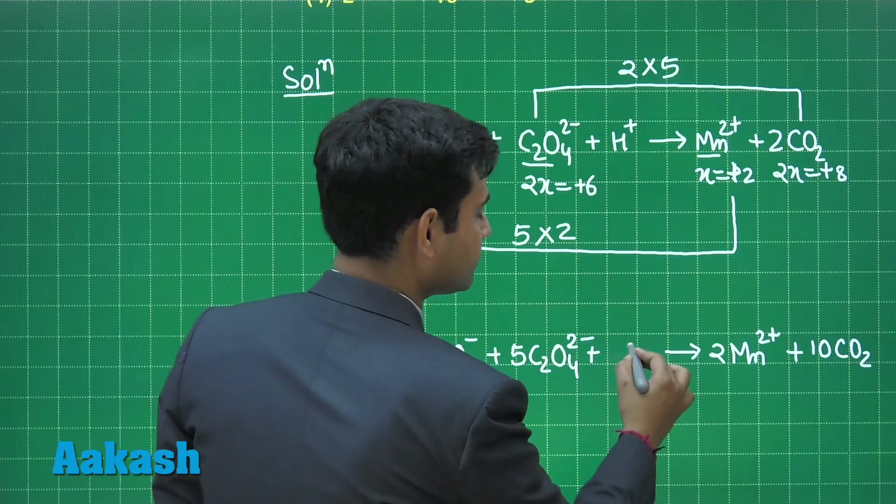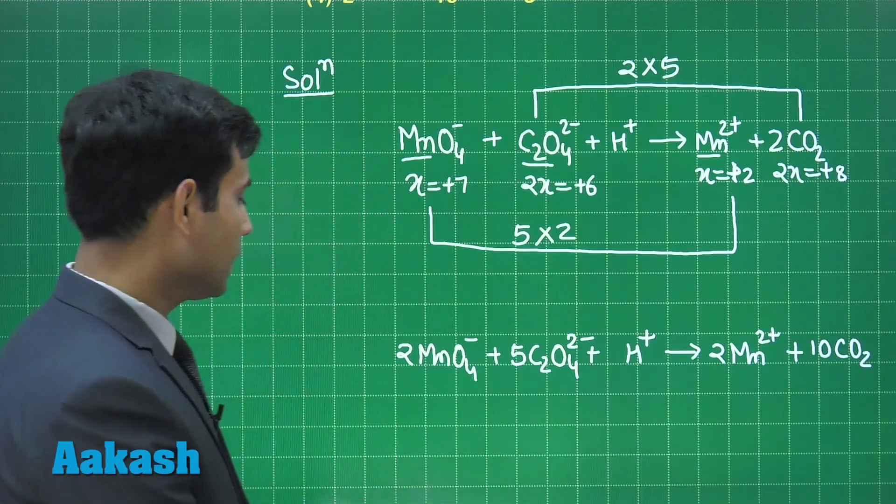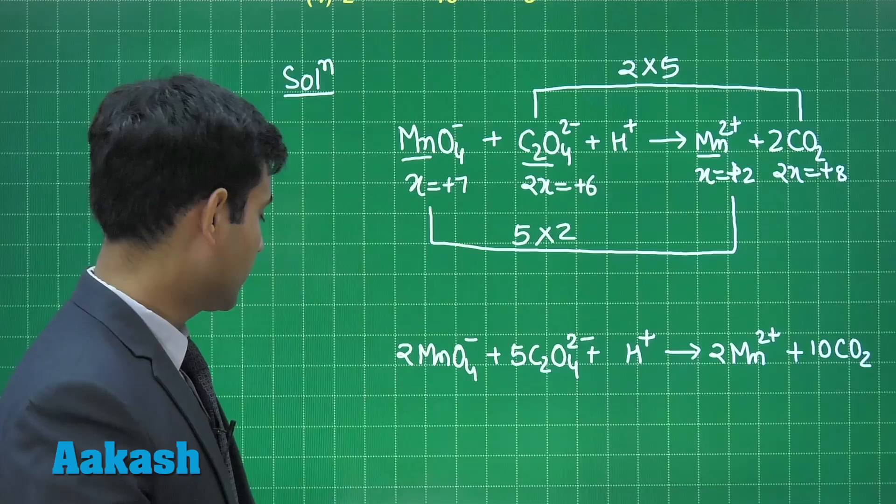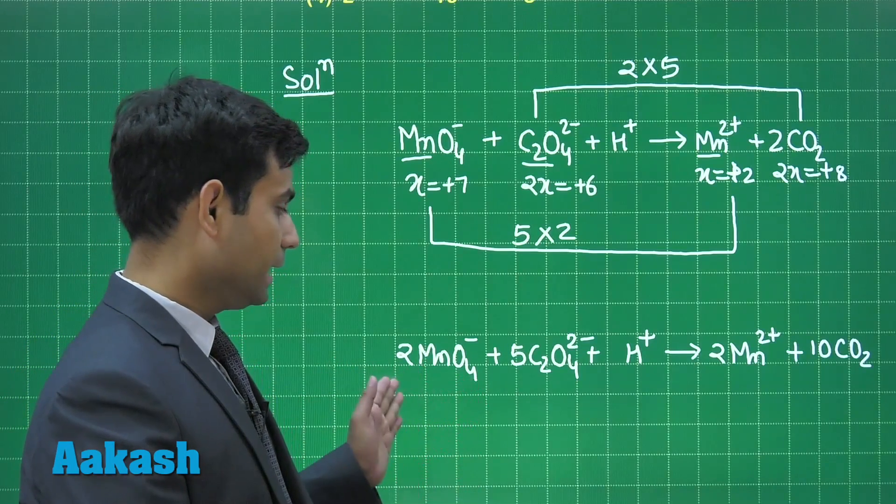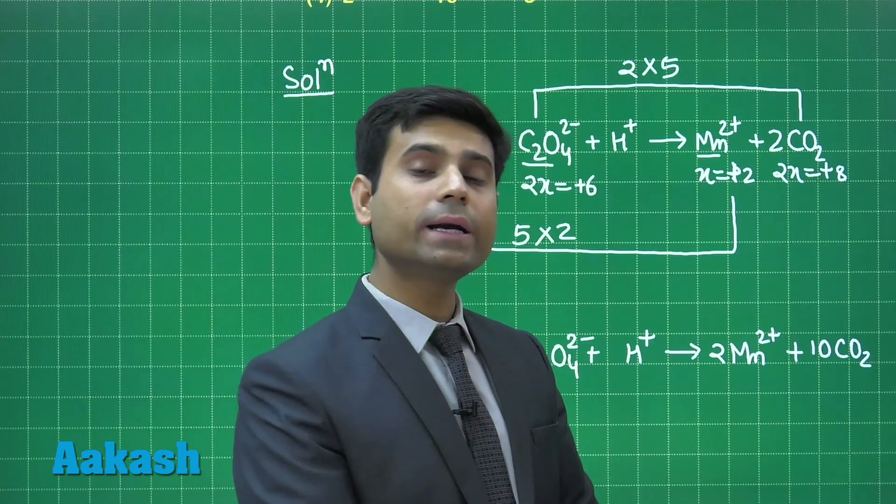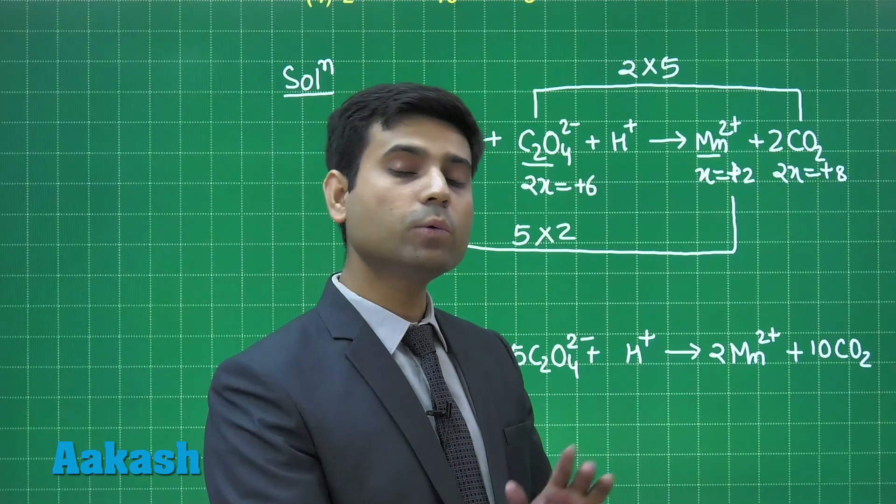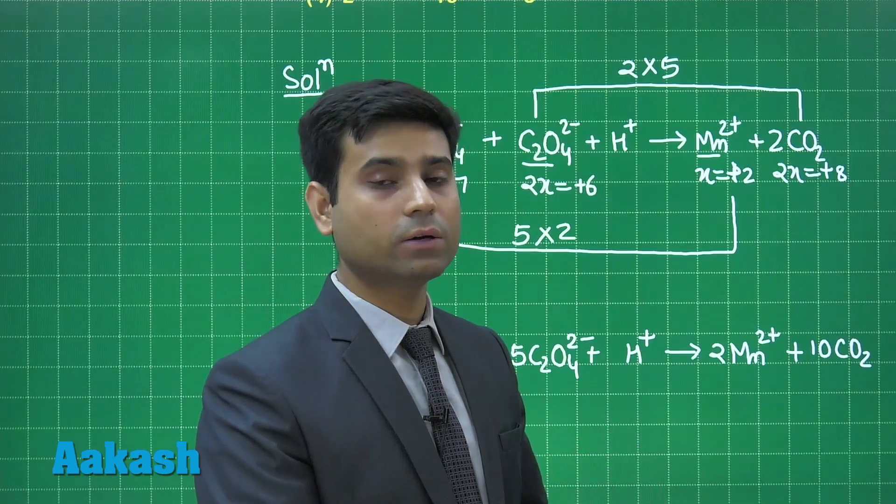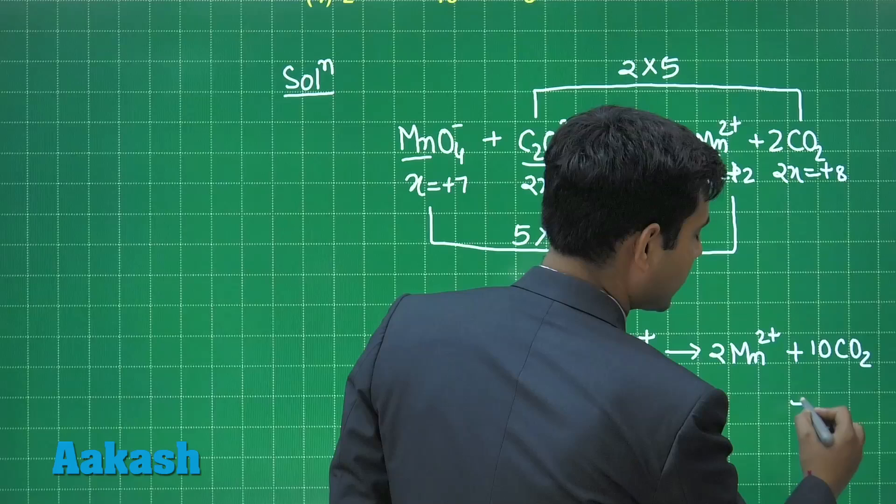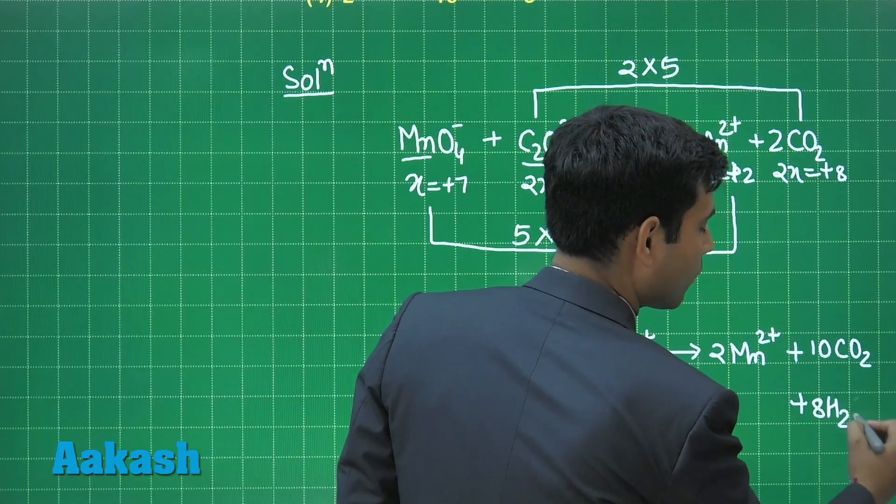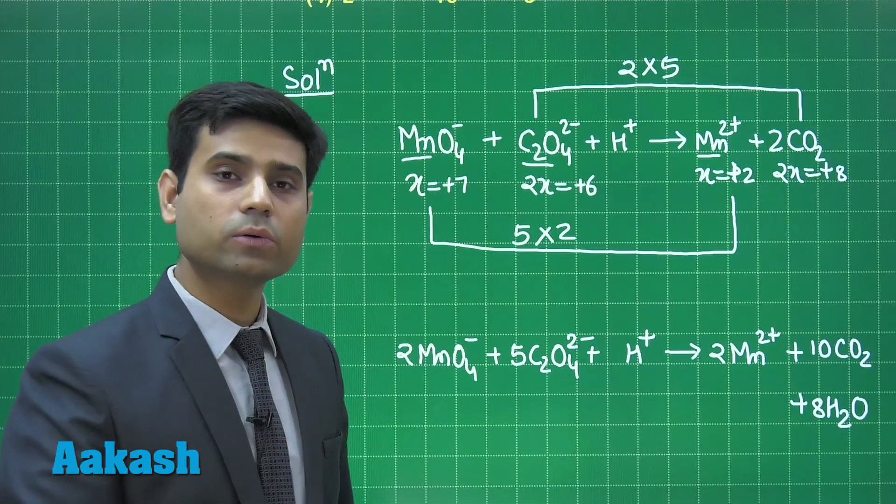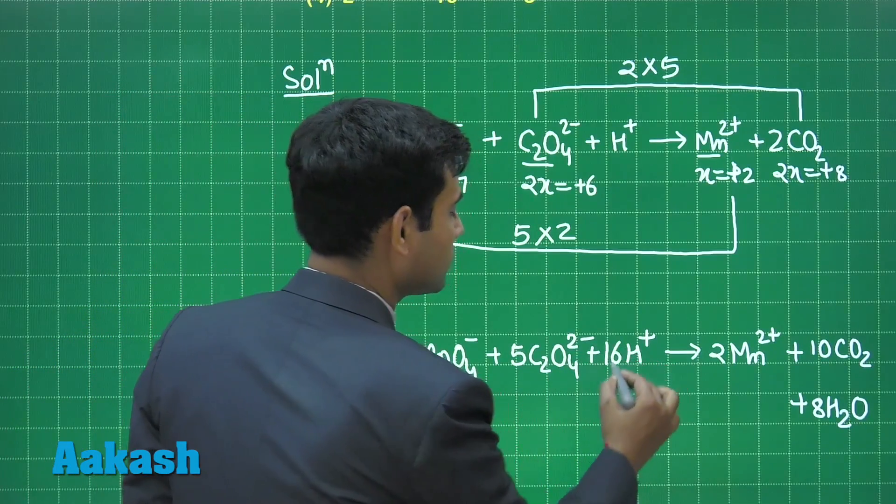We have H plus here. Now, we will write water molecules on that side where oxygen atoms are less. We can see on the reactant side we have 8 plus 20, 28 oxygen atoms. On the product side we have 20 oxygen atoms. So we will have to add 8 molecules of water on the product side. So we will have 8 water molecules on the product side. Why 8? Because we have 8 oxygen less on the product side. And in order to balance the hydrogen atoms, we will have to add 16 H plus.